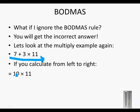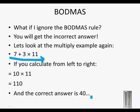7 plus 3 is 10, and then if you multiply 10 with 11, the answer will be 110. But remember the correct answer was in fact 40. So if we do not follow the BODMAS rule, we will get a different answer to the correct one.